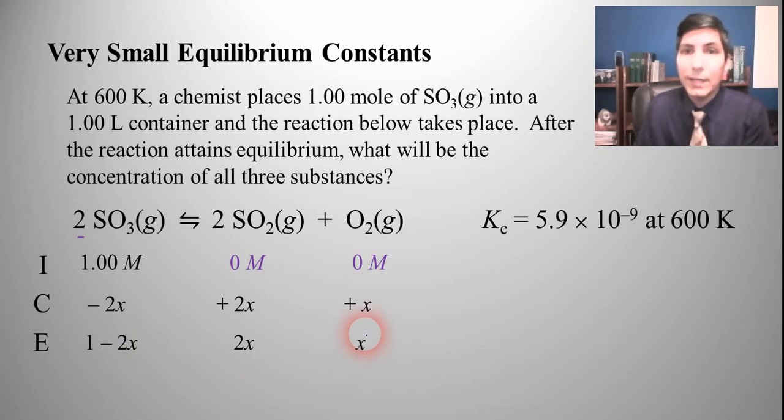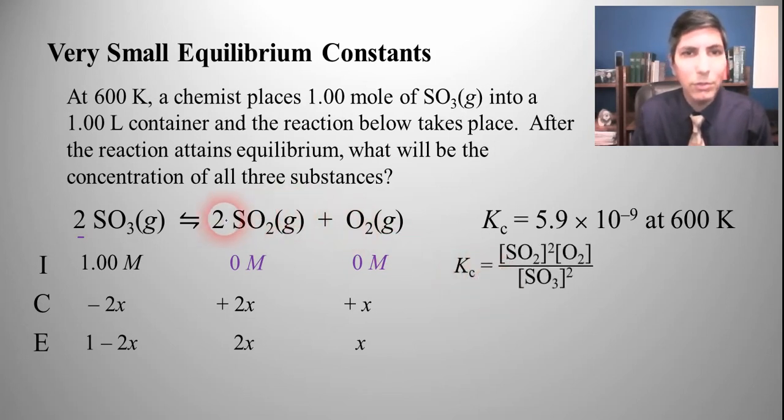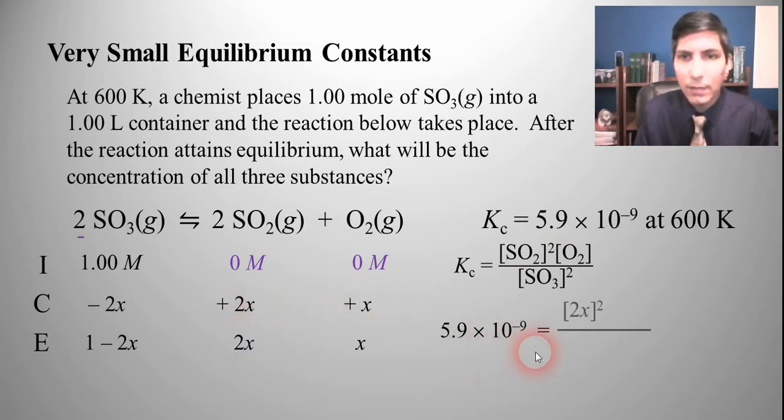So now we're going to plug into the equilibrium constant expression. That's products over reactants raised to the power of the coefficient. So that's Kc equals SO2 squared times O2 concentration all over the concentration of SO3 squared. And now I can plug these in. So Kc is 5.9 times 10 to the minus ninth equals SO2 is 2x quantity squared, oxygen is x, and then SO3 is 1 minus 2x quantity squared.